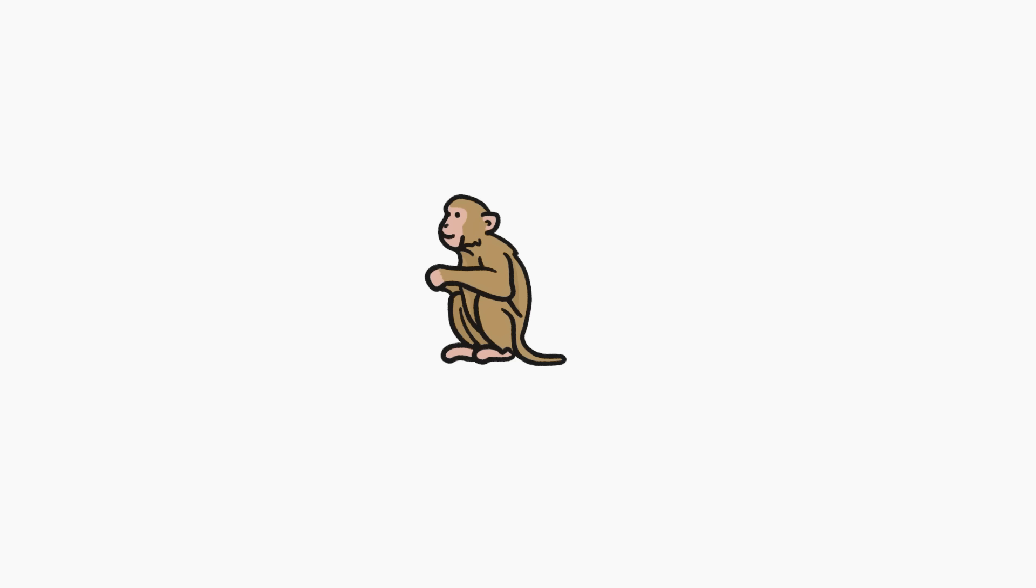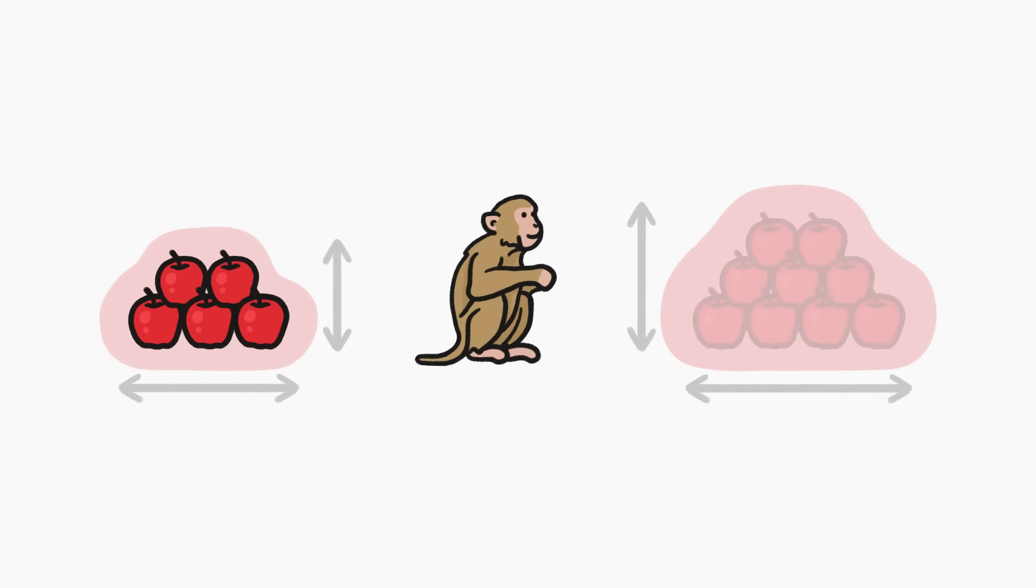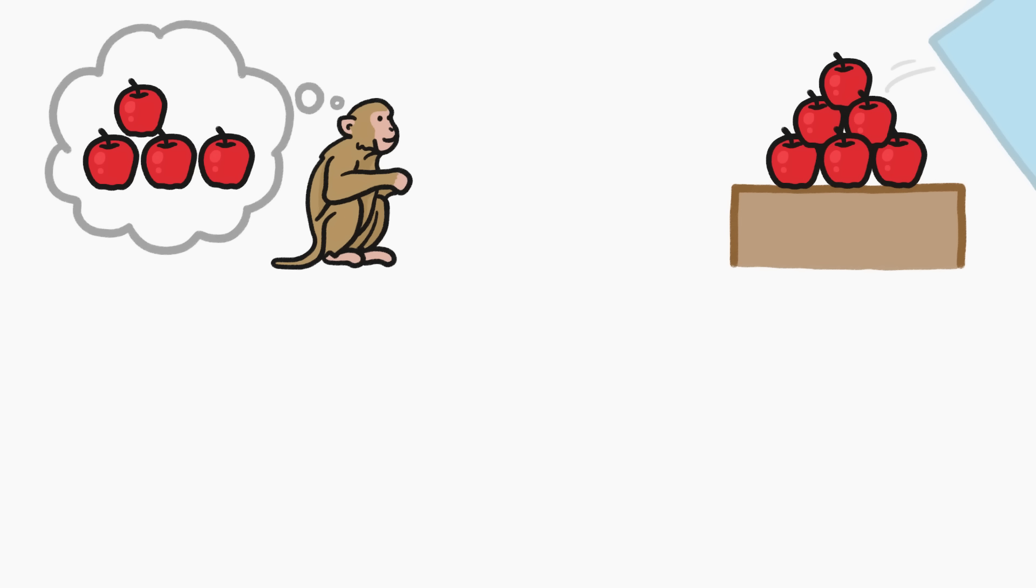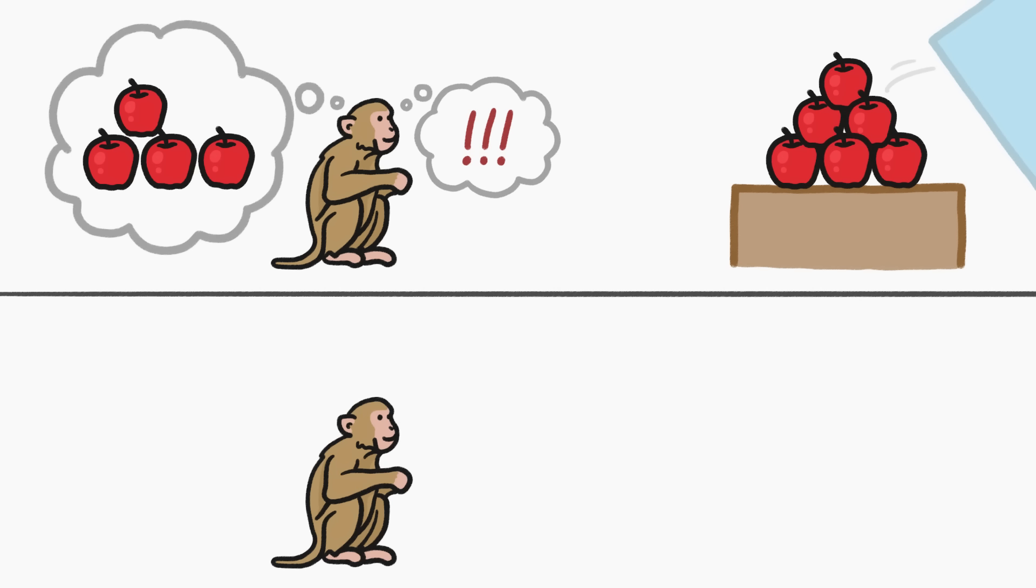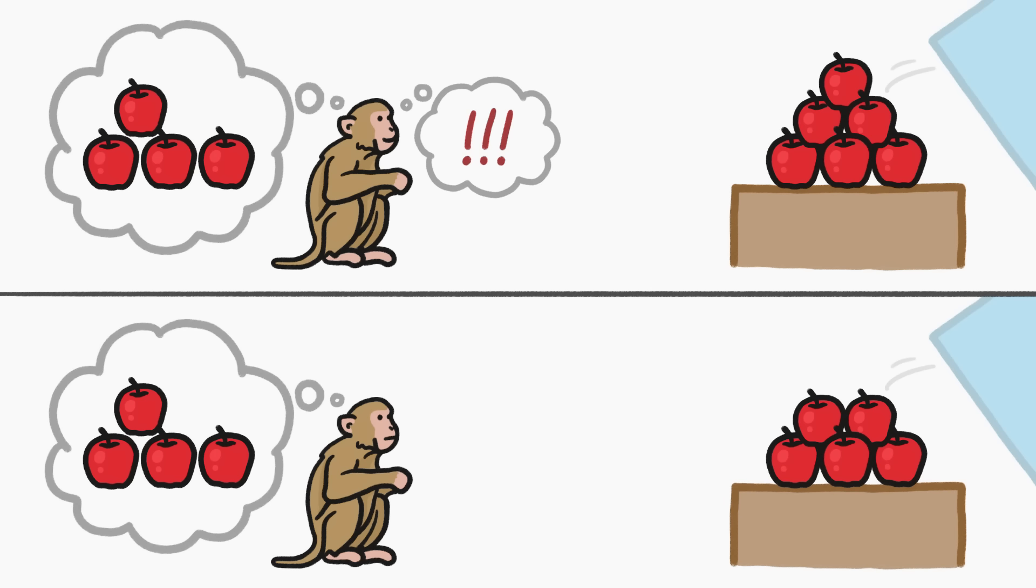What the monkeys actually seem to be doing is comparing the relative sizes of two sets of stuff. One set is the amount of stuff that they see go behind the poster board, and the other set is the amount of stuff they see get revealed. So if they expect there to be a pile of apples that looks like this, and instead they see a pile that looks like this, that relative difference is big enough for them to notice. But if they expect a pile that looks like this, and instead they see a pile that looks like this, that relative difference seems to be small enough that they don't seem to notice.